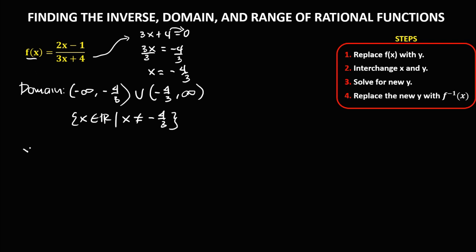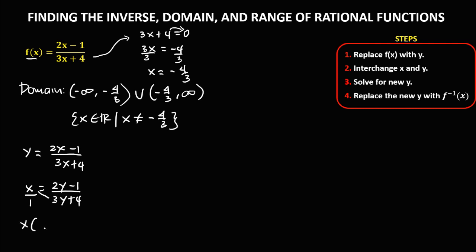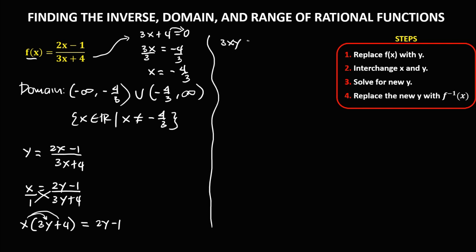To find the inverse, replace f of x with y: y equals 2x minus 1 over 3x plus 4. Then interchange x and y, so x equals 2y minus 1 over 3y plus 4. Cross multiply: x times 3y plus 4 equals 2y minus 1. Simplify by distributing: 3xy plus 4x equals 2y minus 1.